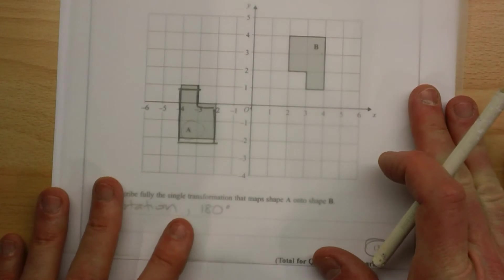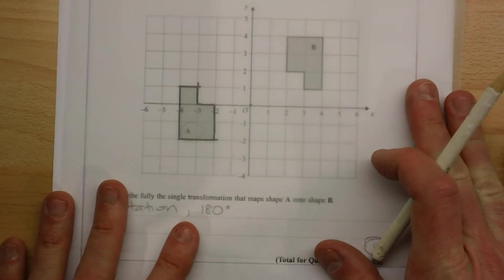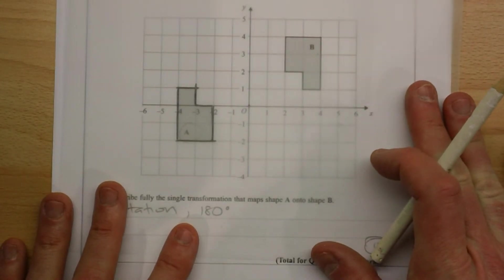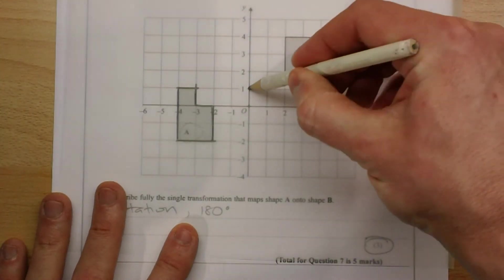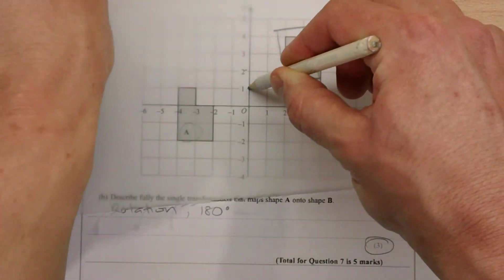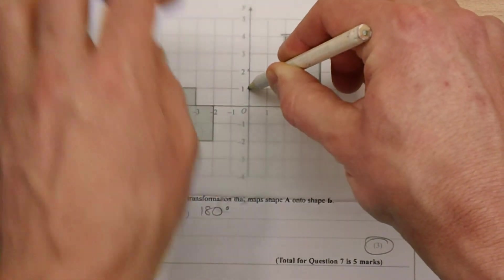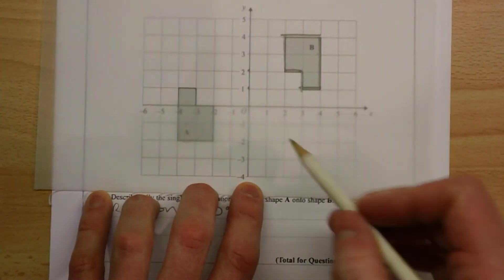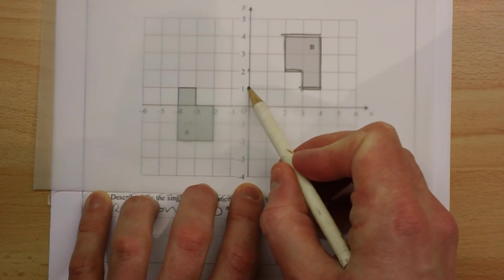So go back to the starting point, and keep on trying different centers of rotation until you get the one that works. And the one that works in this case is that point there, which is given by the coordinates 0, 1.